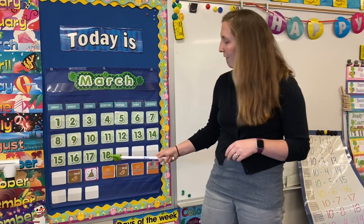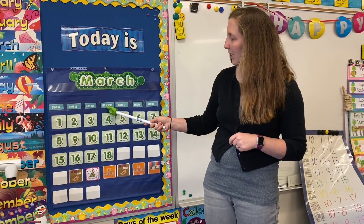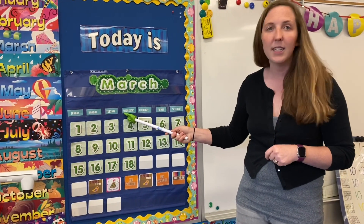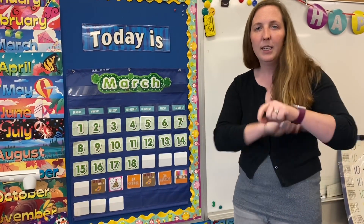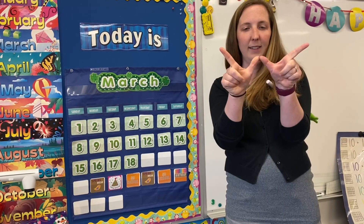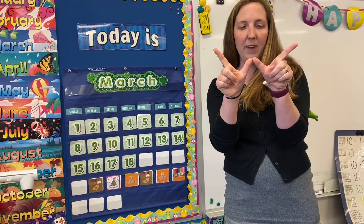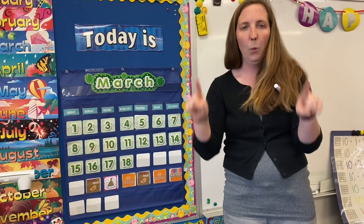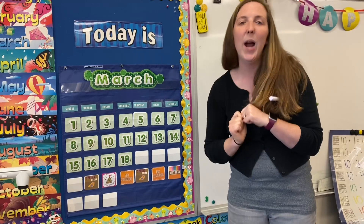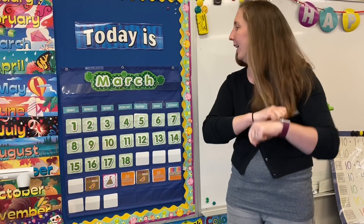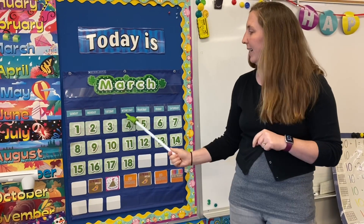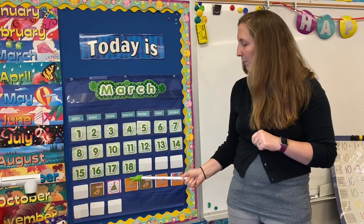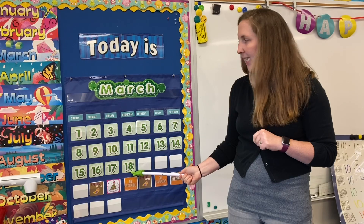If I point to that eighteen and slide up to the day of the week, I see that it starts with the letter W. W looks like this — I like to make it with my fingers — and it says W-W-W for Wednesday. Wednesday is our day of the week today, and it is March eighteenth.